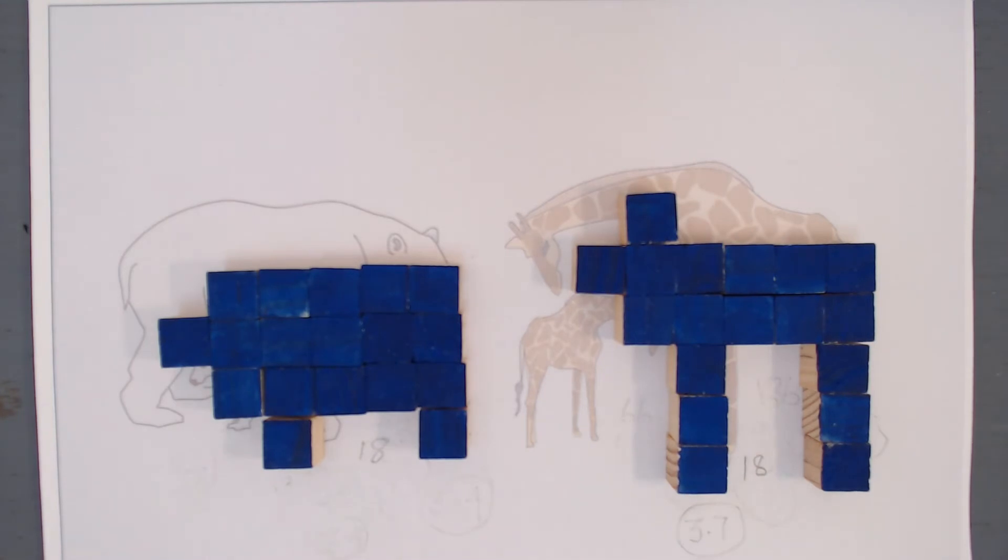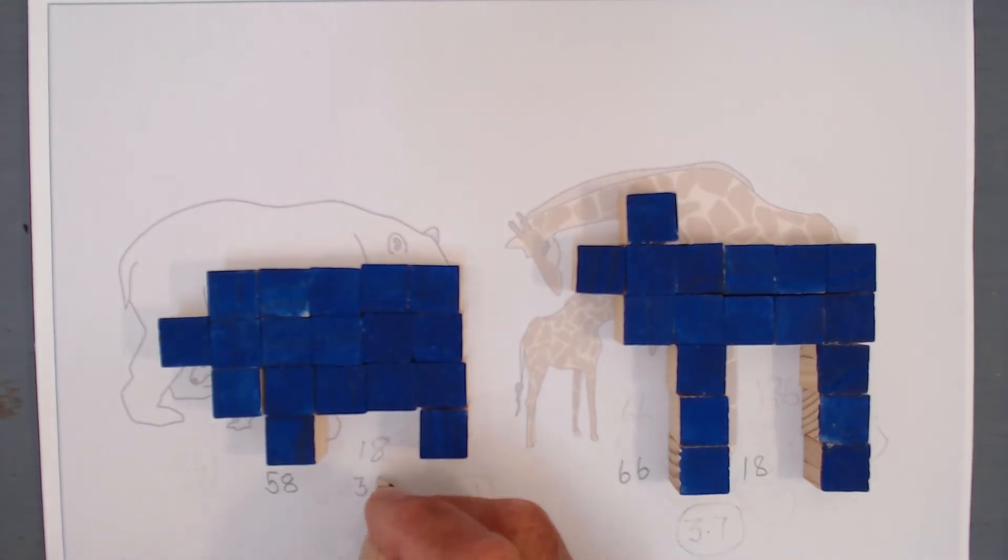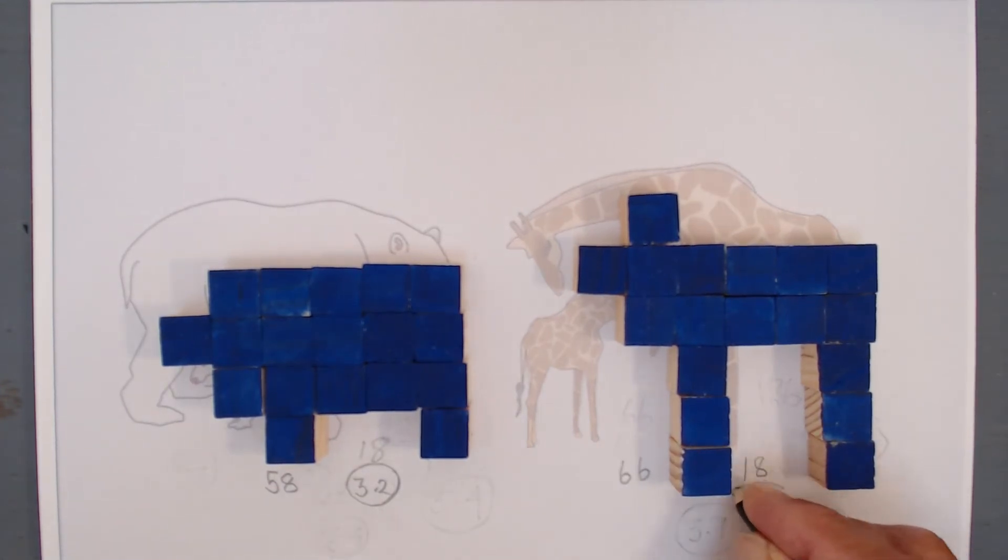What about the surface area? That's the front, back, and the sides of all the blocks. Well, the animal in the cold climate has a surface area of 58 units. The surface area to mass ratio of the animal in the cold climate is 3.2, whereas the surface area to mass ratio of the animal in the hot climate is 3.7. This means that the animal in the hot climate can lose more heat per kilogram than the animal in the cold climate, which is what we want.